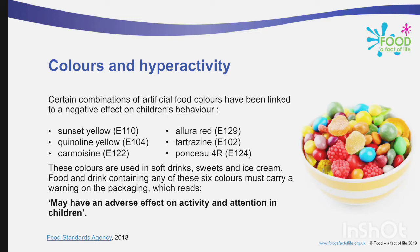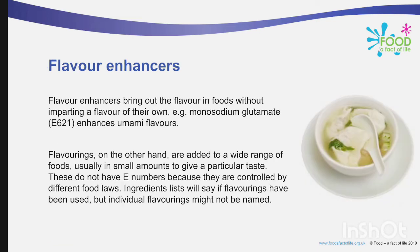Certain combinations of artificial food colors have been linked to a negative effect on children's behavior. These six colors are: Sunset Yellow, Quinoline Yellow, Carmoisine, Allura Red, Tartrazine, and Ponceau 4R. These colors are used in soft drinks, sweets and ice creams. Food and drink containing any of these six colors must carry a warning on the packaging which reads: 'may have an adverse effect on activity and attention in children.'